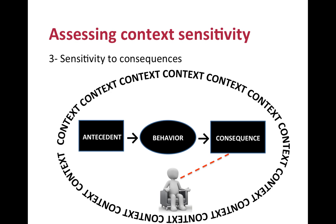Consequences are elements of the context that happen after a behavior and increase or decrease its probability. If the consequence is desirable, the behavior tends to happen more often; if undesirable, less often. Just as for antecedents, we need to take into account the various symbolic functions that events can have. For example, increased intimacy resulting from self-disclosure can be desirable and thus reinforcing for some people, but undesirable and punishing for others — its function depends on the client's symbolic and non-symbolic history with intimacy. And as for antecedents, we need to assess the degree of influence of these consequences, as some have more influence than others.